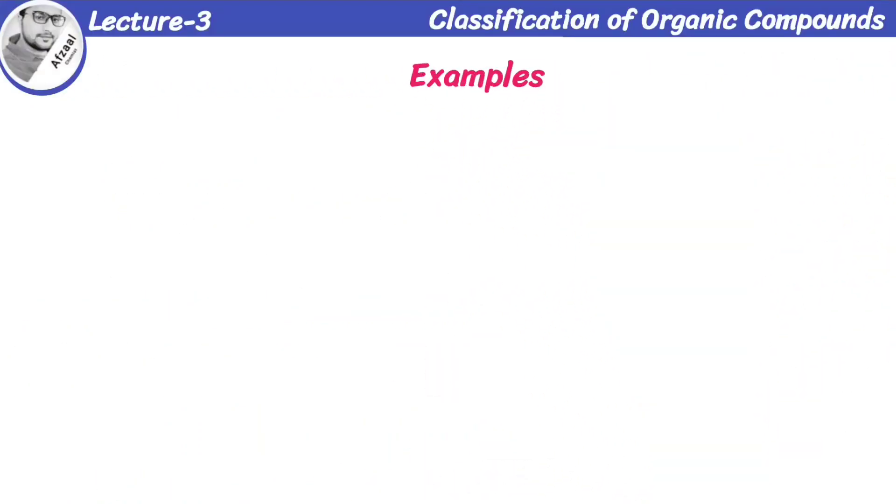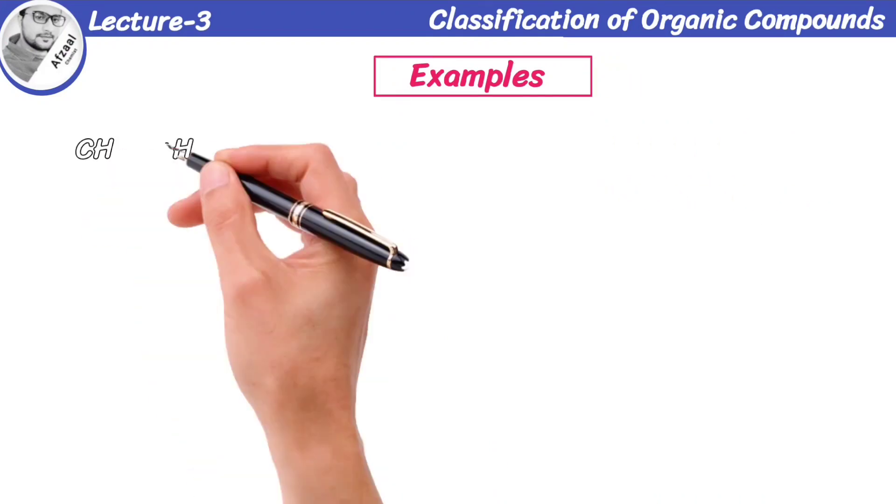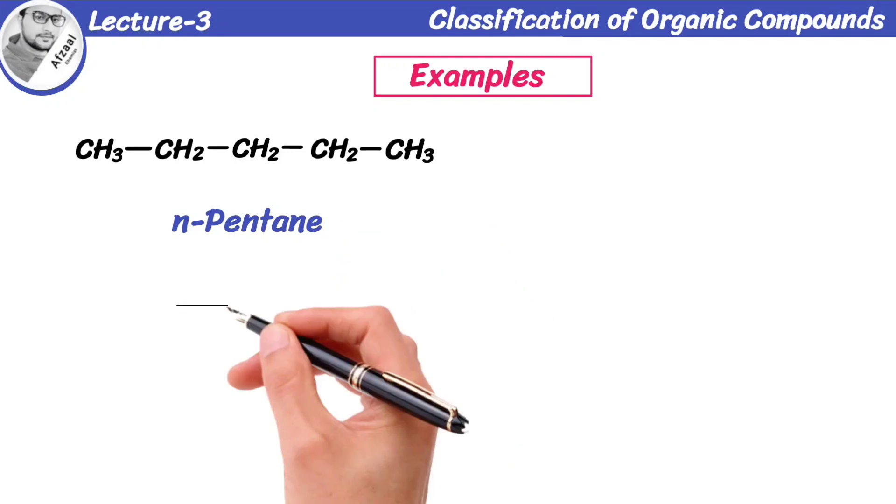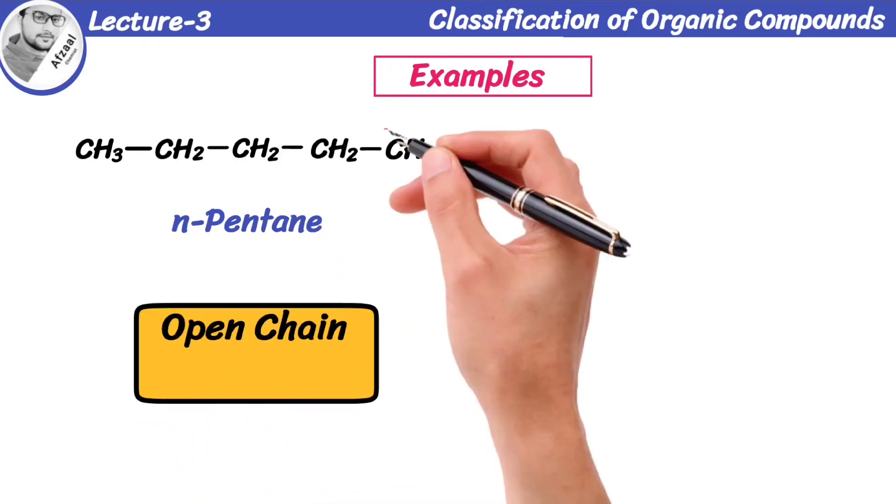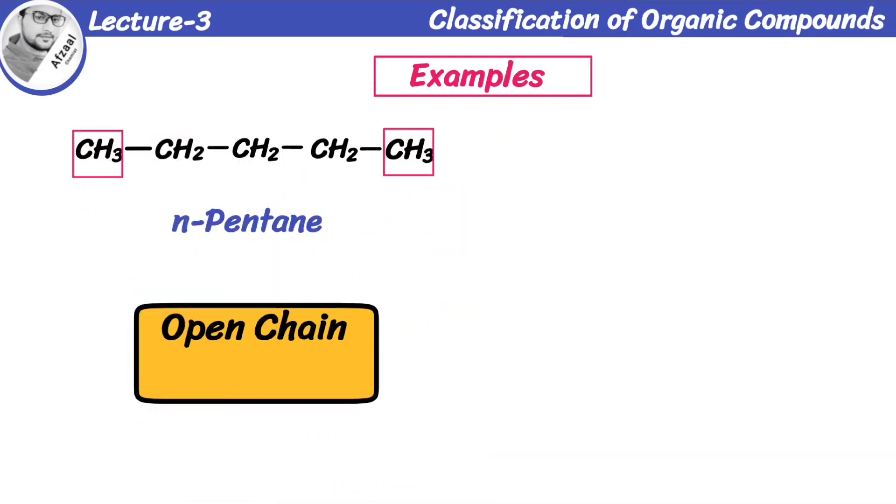Let me show you a few examples to illustrate different classes of organic compounds. Here is an example of n-pentane. This compound has an open chain structure because carbon ends are free. There is no branch attached to the carbon chain, that's why this compound is straight-chained organic compound.